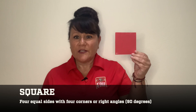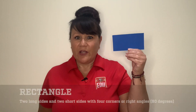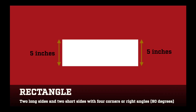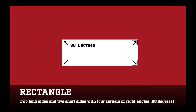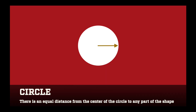The first shape I want to show you is a square. A square has four equal sides and four right angles. This is what a right angle looks like. A right angle is 90 degrees. The next shape is a rectangle. A rectangle has two longer sides that are equal and two shorter sides that are equal. It also has four right angles. A circle is a round shape that has no corners or edges. In geometry, we describe it as a closed, curved shape. A circle is a shape where there is an equal distance from the center of the circle to any part of the shape.